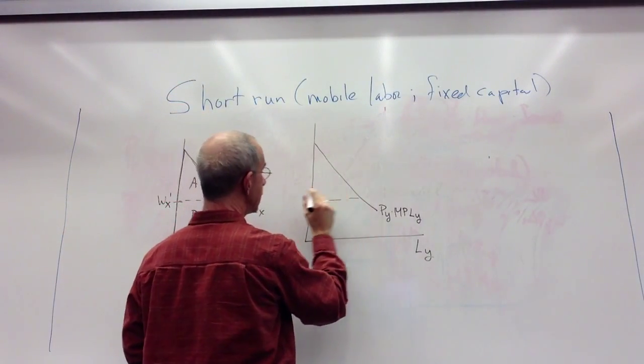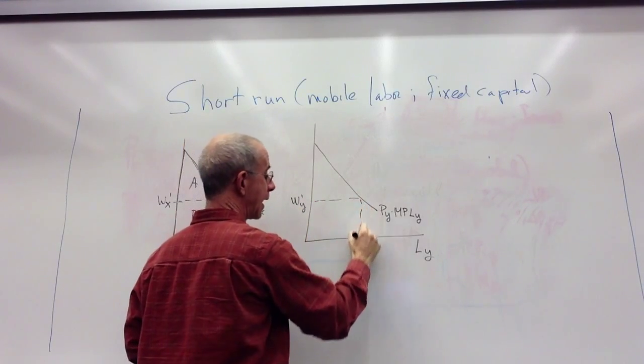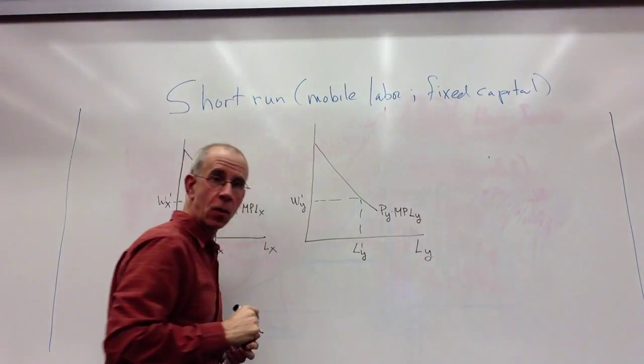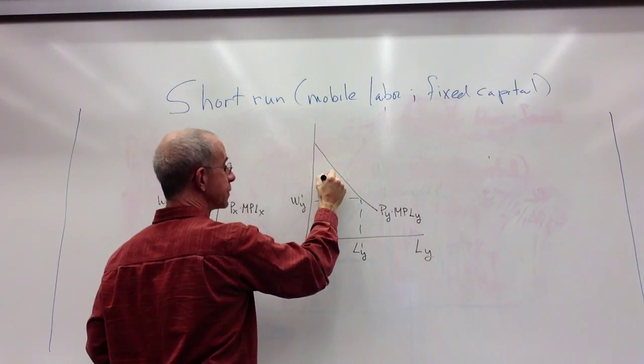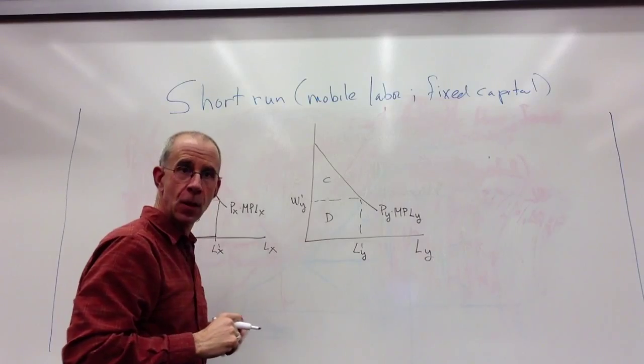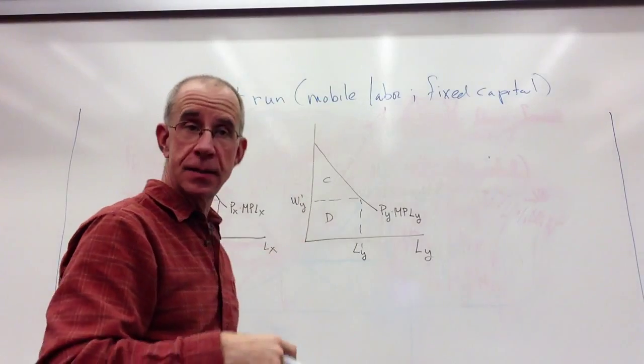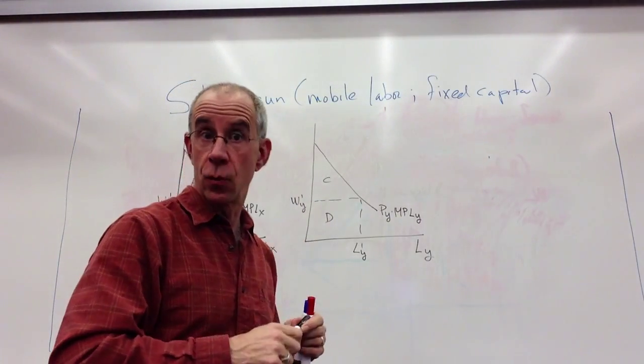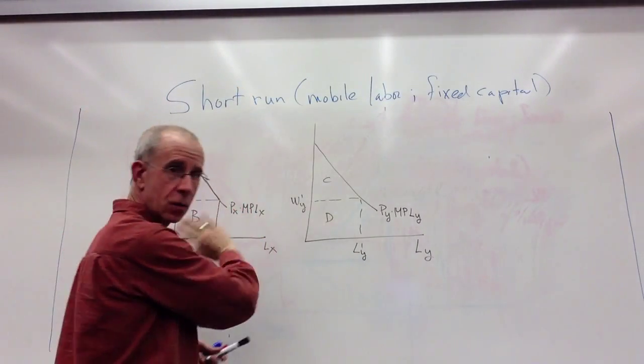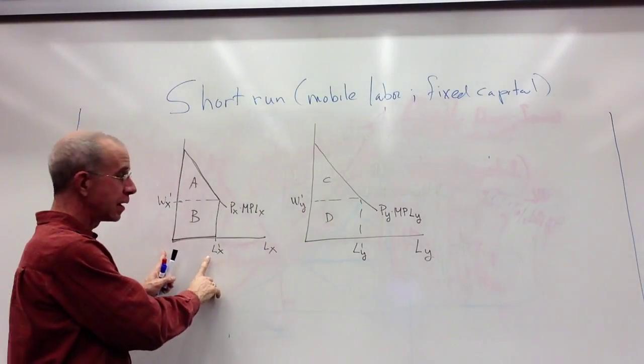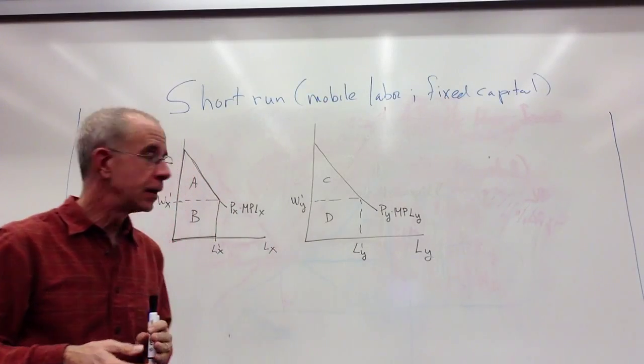And they're going to pay the market wage and hire this many workers. So these are analogous. Let's call this C and D, where C is going to be the payments to capital, D is the wage bill, C plus D is the total revenue to the firm using capital and labor. So imagine these are the only two industries. We've got this many workers employed in X, this many workers employed in industry Y.